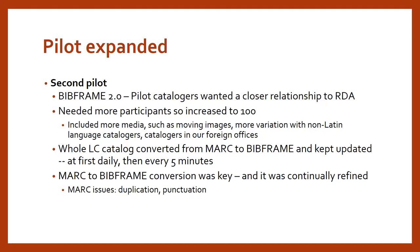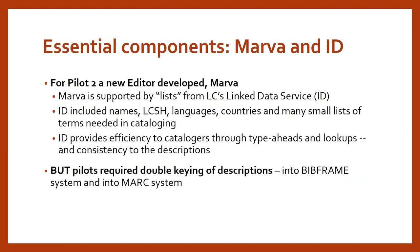The MARC to BibFrame converter was a major key for this pilot and has been continually refined to deal with duplication in MARC and the abundance of special punctuation inherited from the ISBD era. There are two essential subsystems: MARVA, the BibFrame editor catalogers use to create BibFrame descriptions, and the linked data service called ID. ID is an RDF application containing many term lists, including the NACO name authority file, first made available in 2010.